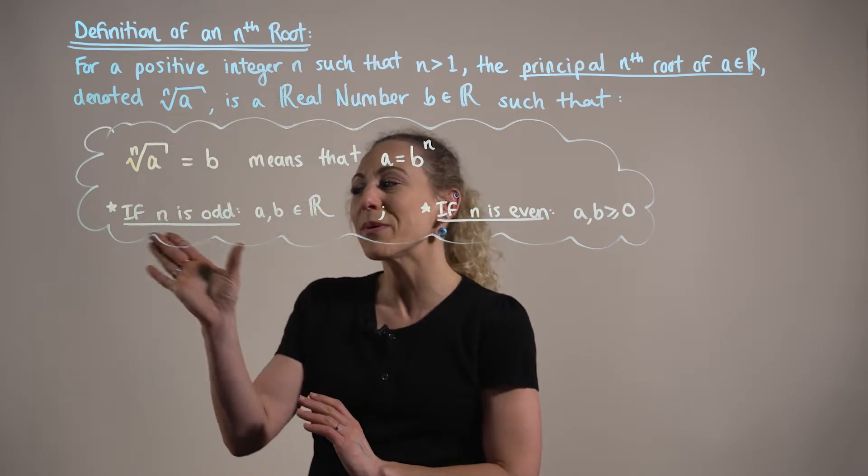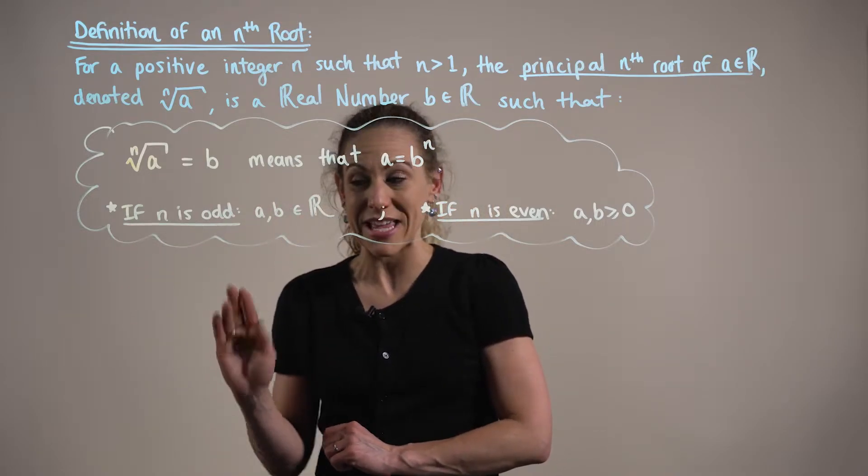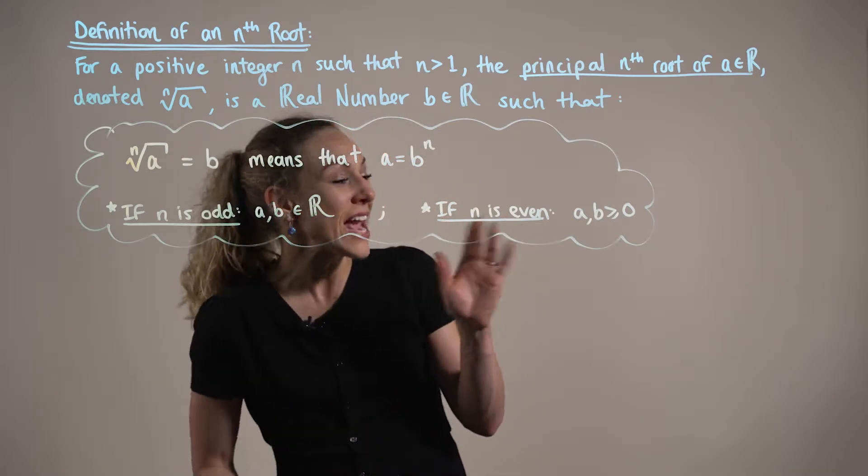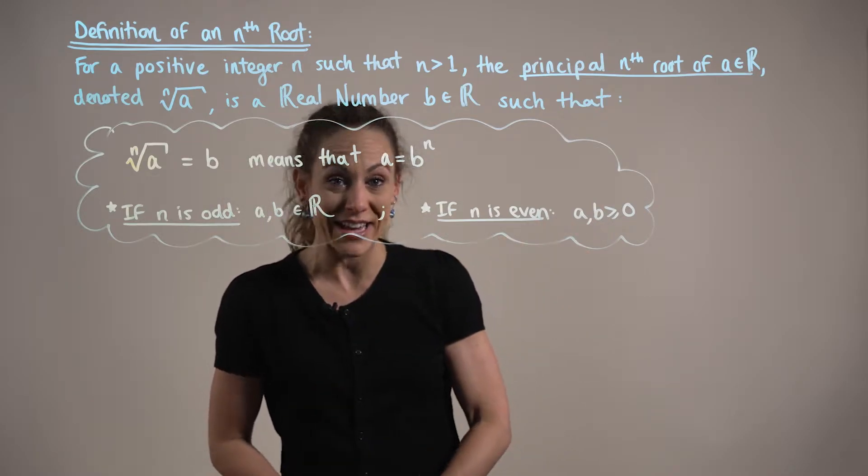Now, when this number n is odd, there are no restrictions on a and b. They could be any real number our little hearts desire. However, when n is an even number, both a and b must be non-negative.